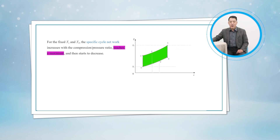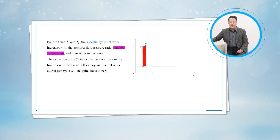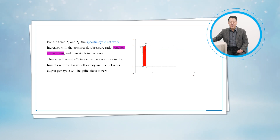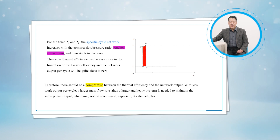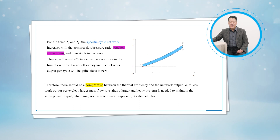For fixed T1 and T3, the cyclic specific net work increases with the compression or pressure ratio, reaches a maximum, and then starts to decrease. The cycle thermal efficiency can be very close to the Carnot efficiency, but the net work output per cycle will be quite close to zero. Therefore, there should be a compromise between the thermal efficiency and the net work output, as a lower net work output per cycle requires a larger mass flow rate to maintain the same power output, which may not be economical, especially for vehicles.